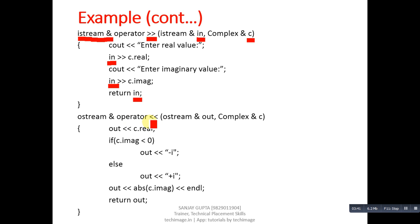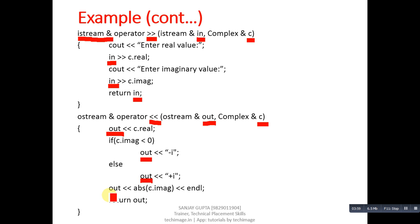Similarly the insertion operator is defined. It receives the reference of cout, and 'c' receives the reference of the object used with the cout statement. In place of cout we use 'out' here to print values on the console. We are using call by reference, so the formal argument represents the actual argument — we can replace cin with 'in' and cout with 'out'. At last, the reference of 'out' is returned.